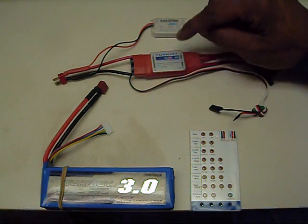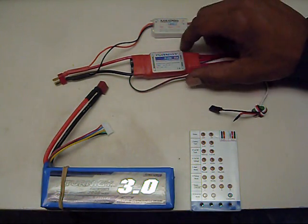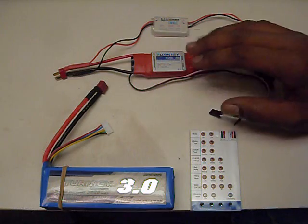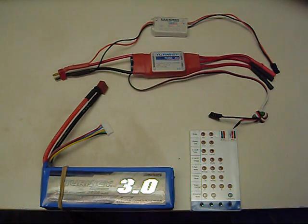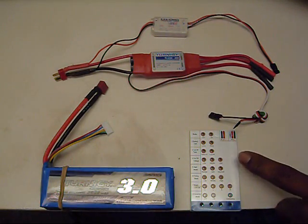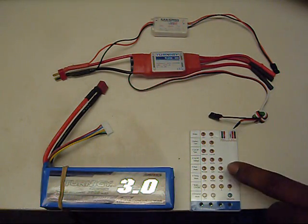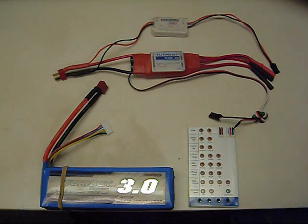Now this speed controller, this is a Turnigy Plus 60 amp speed controller, but it's pretty much the same thing as a lot of the Hobbywing speed controllers as well as some of the Exceed RC's and a few other ones. But if the speed controller shows that you can program it with this type of program card, then these are pretty much going to be the same instructions that you can follow.